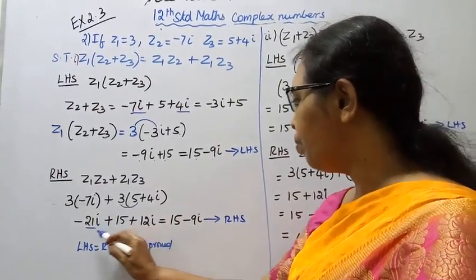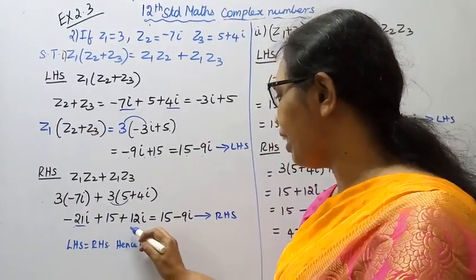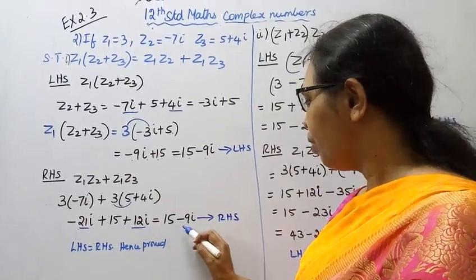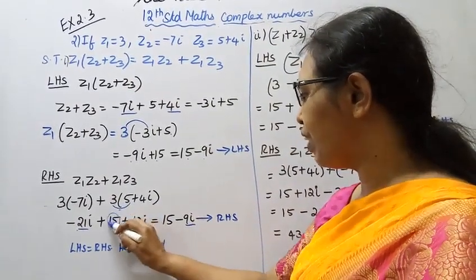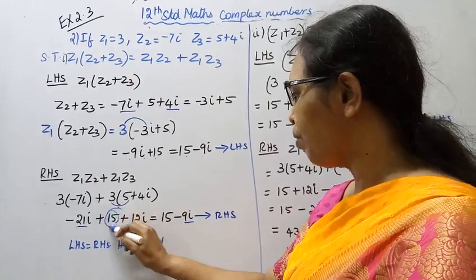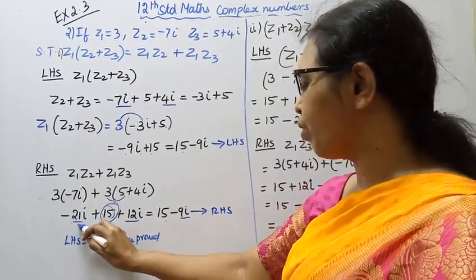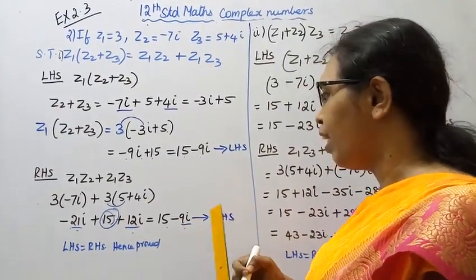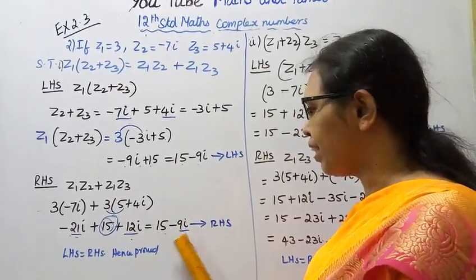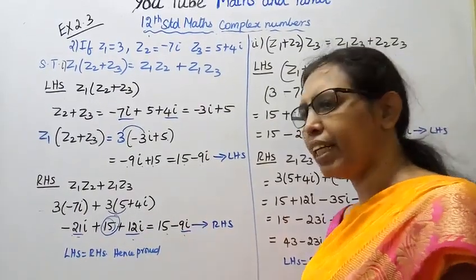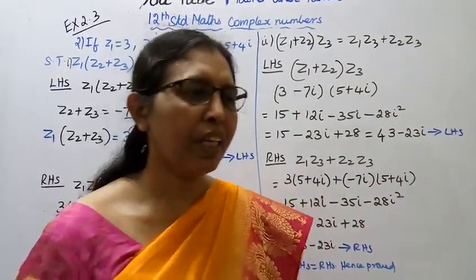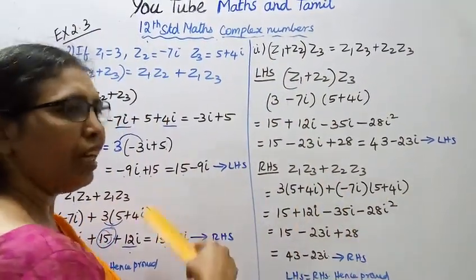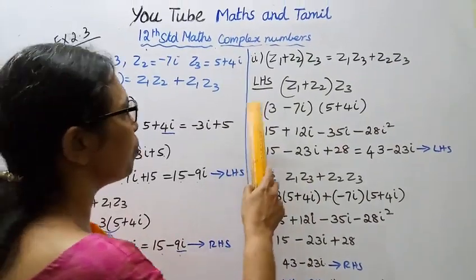So right hand side: minus 21i plus 15 plus 12i. Combining imaginary parts: minus 21i plus 12i equals minus 9i. Real number is 15. So right hand side equals 15 minus 9i. Left hand side equals right hand side, hence proved. Substituting the values, left hand side is equal to right hand side.